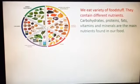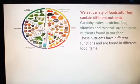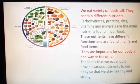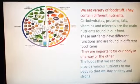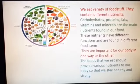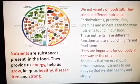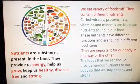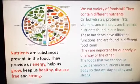So five nutrients you are going to learn this year. These nutrients have different functions and are found in different food items. Function means how it works when you take different food items. They are very important for our body in one way or the other. The foods that we eat should provide various nutrients so that we stay healthy and strong. Nutrients are the substances present in the food that provide us energy, help us to grow, keep us healthy, disease-free and strong.